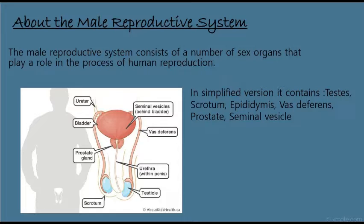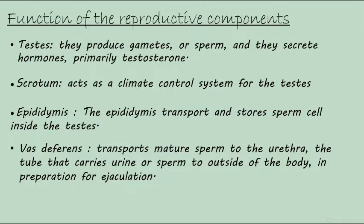In a simplified version, it contains the testis, scrotum, epididymis, vas deferens, prostate, and seminal vesicle basically.